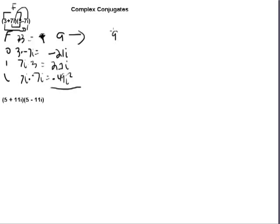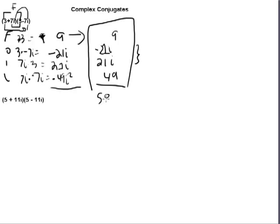So we have 9, we have negative 21i, we have positive 21i, and we have positive 49, right? Because i squared is negative 1, and that makes the entire term positive. So you may already have noticed the special situation which involves the i terms. 9 plus 49 is going to be 58, but the i's, we have 21i and negative 21i, which becomes 0.